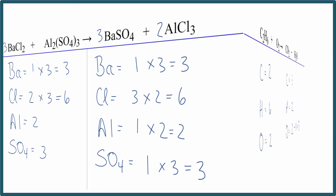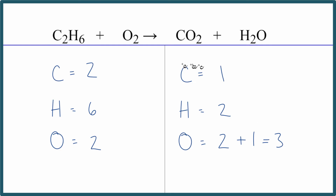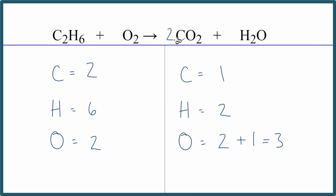Now let's look at combustion reactions. A combustion reaction has a hydrocarbon plus oxygen, producing carbon dioxide and water. If you see CO₂ and water in the products with oxygen and a hydrocarbon as reactants, that's combustion. Be careful counting oxygens — watch for the two oxygens in CO₂. One key rule: leave the oxygens until last when balancing.